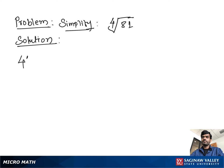Simplify the fourth root of 81. To find the fourth root of 81, we have to find a number which we multiply four times by itself to give us 81. If we multiply three four times, it gives us 81.